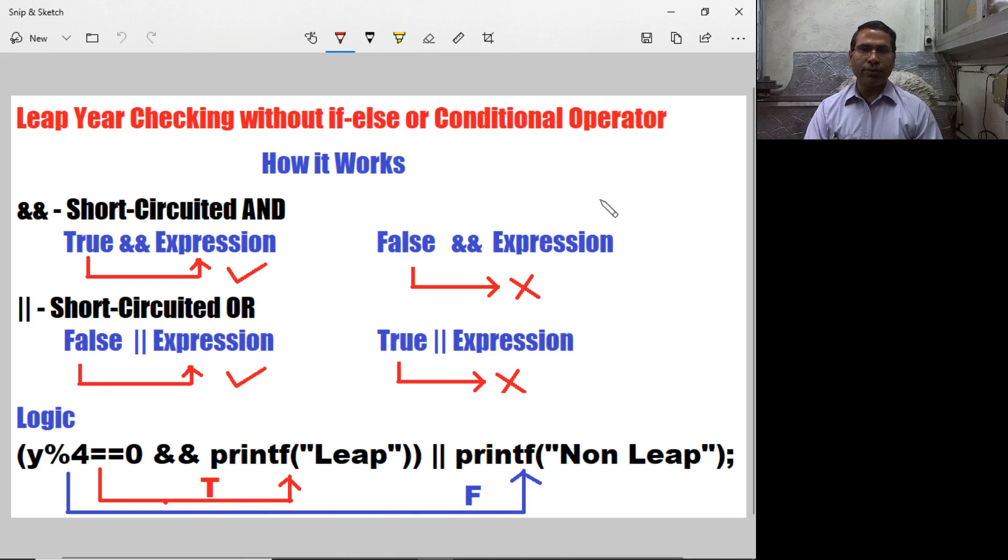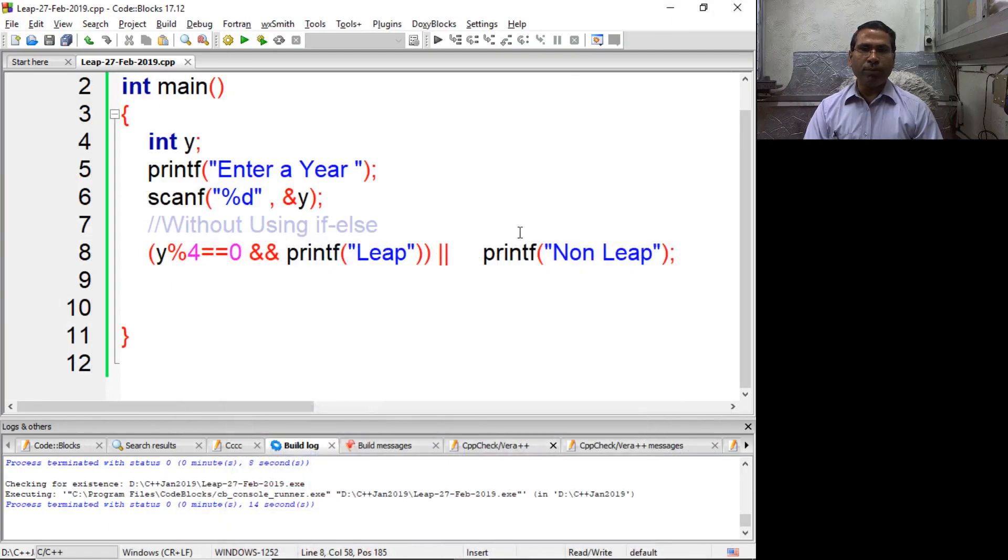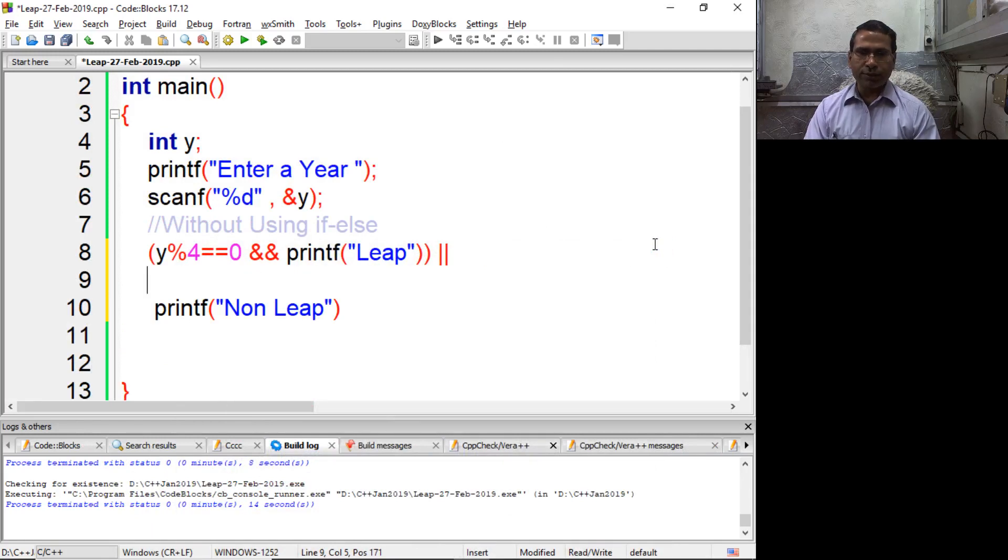Now we have to improve this code for centuries also. So I am introducing some more conditions. If year is not divisible by 100 but divisible by 4, so it's a leap year.